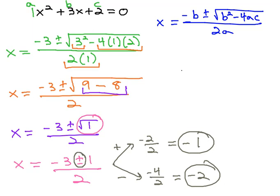Again, we found those two solutions by identifying a, b, and c, and using the quadratic formula, the opposite of b, plus or minus the square root of b squared, minus 4ac, all over 2a.